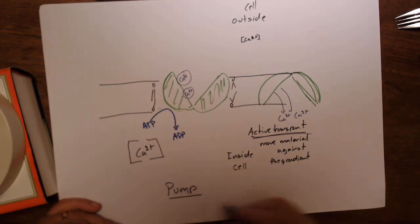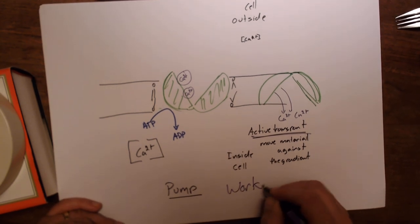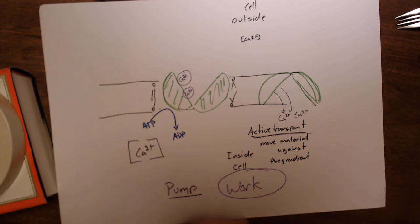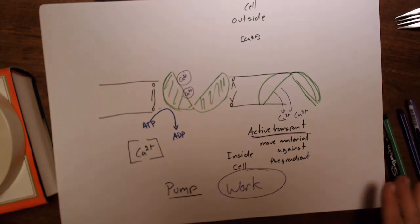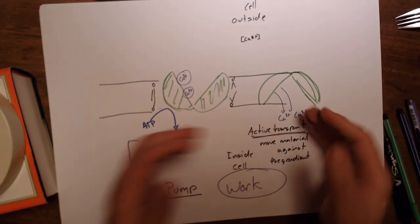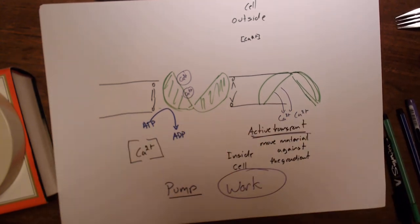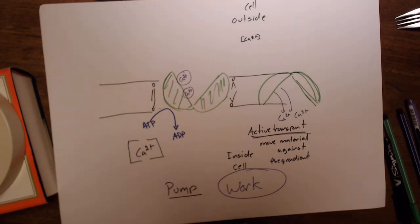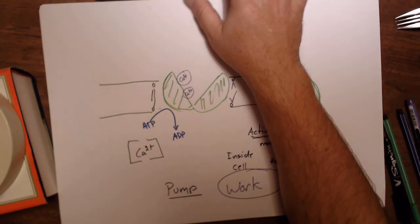Active transport requires energy to move something from a lower concentration to a higher concentration — you're doing work to accomplish something that doesn't happen by itself. Passive transport, like diffusion and osmosis, happens by itself. Things that don't happen by themselves require active transport, which requires the investment of chemical energy in the form of carriers like ATP, NADH, or NADPH. That's the overview of active transport and the membrane.